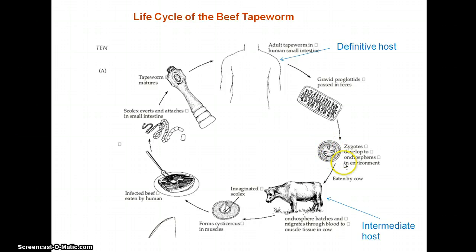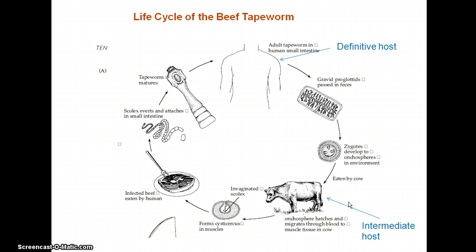These structures are called onchospheres once they develop this covering. The onchospheres often end up on grass or in untreated water, depending on what part of the world you're in and what the sanitation conditions are like. If an onchosphere ends up on some grass where cows are living, the cow may eat the grass and swallow the onchosphere. It then goes from the intestine, migrates through blood vessels into the circulatory system, and finds its way into muscle tissue in the cow.